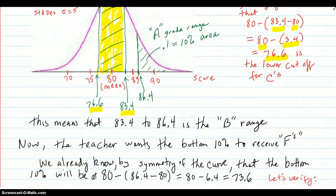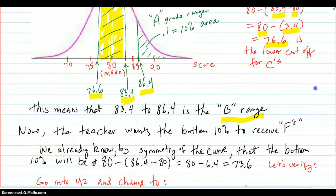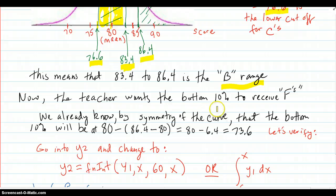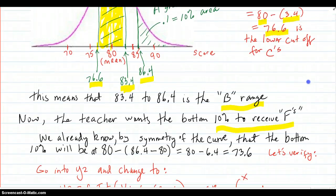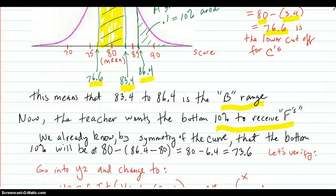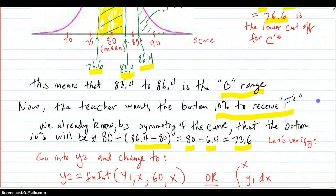Okay. This means that by forcing it, the 83 to the 86 must be your B range. Okay, so that's covered. Now, the teacher wants the bottom 10% to receive F's. We already know by symmetry that the bottom 10% will be, remember the top 10% went up to 86.4. So, that difference is 6.4. So, from the mean up to the cutoff for the A's was a 6.4 difference. So, if you go down from 80, that same amount, that's 73.6. So, that's going to be your cutoffs for the F's.